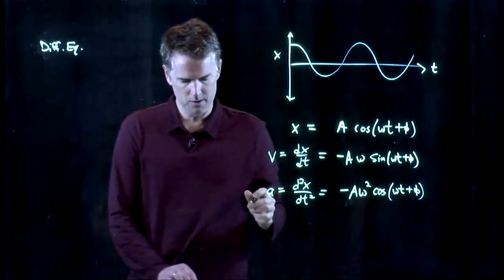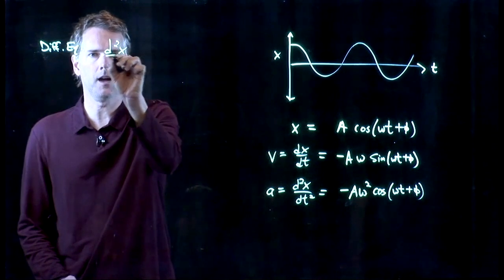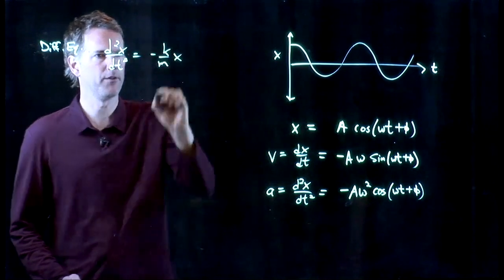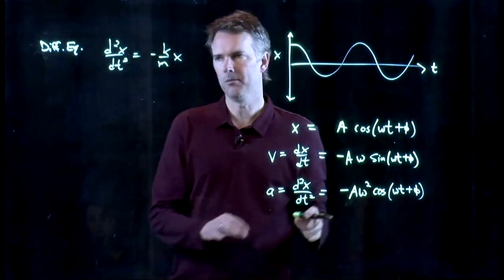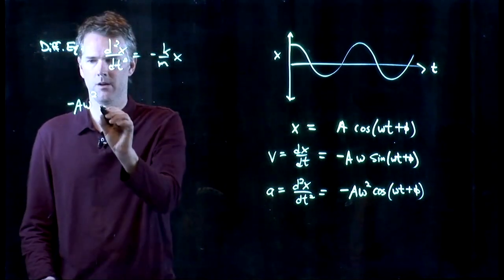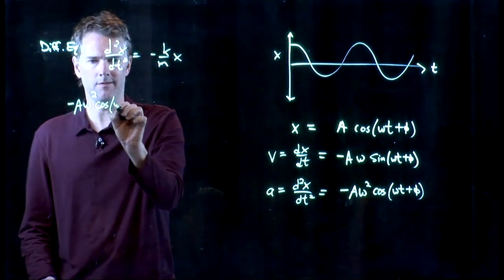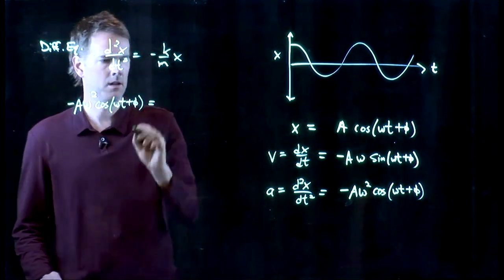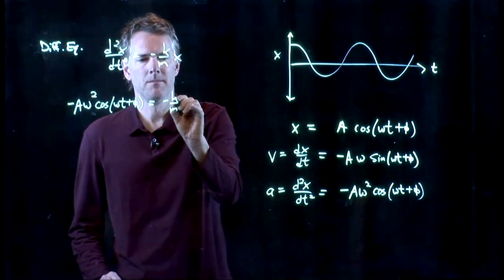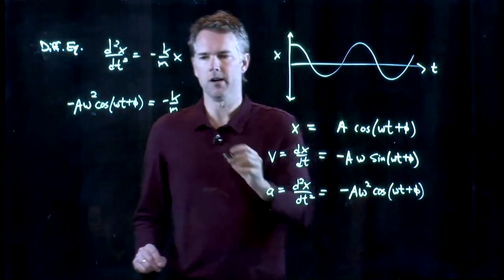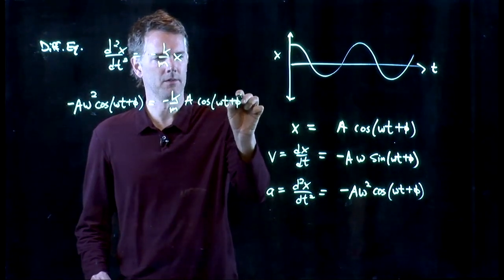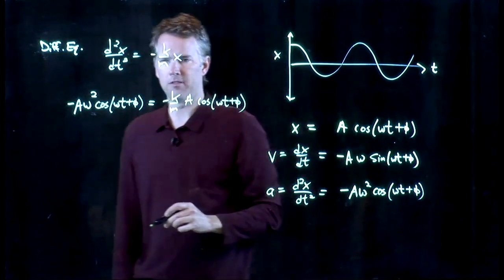Our differential equation looked like the following: d²x/dt² was negative k over m times x. And now we know those terms, let's put them back in. So d²x/dt² is negative A omega squared cosine of omega t plus phi, and that's going to be equal to negative k over m times x, which is this guy right here: A cosine omega t plus phi.